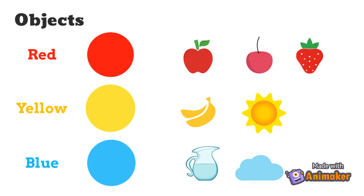Now, let us learn colors using objects. Every object has a color. Let's see some examples.